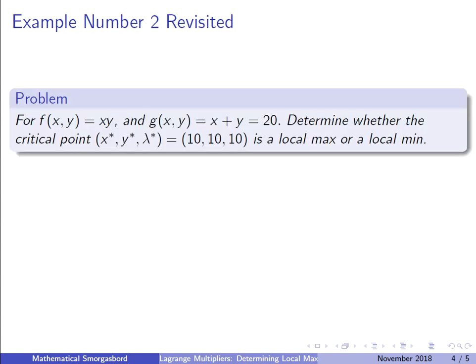All right, so now let's just look at the example again. So if you remember the easy example, it was finding the maximum possible product of two numbers given that their sum is 20. And I'll leave a link to this problem below and I'll also leave it in the video if you want to just review that.